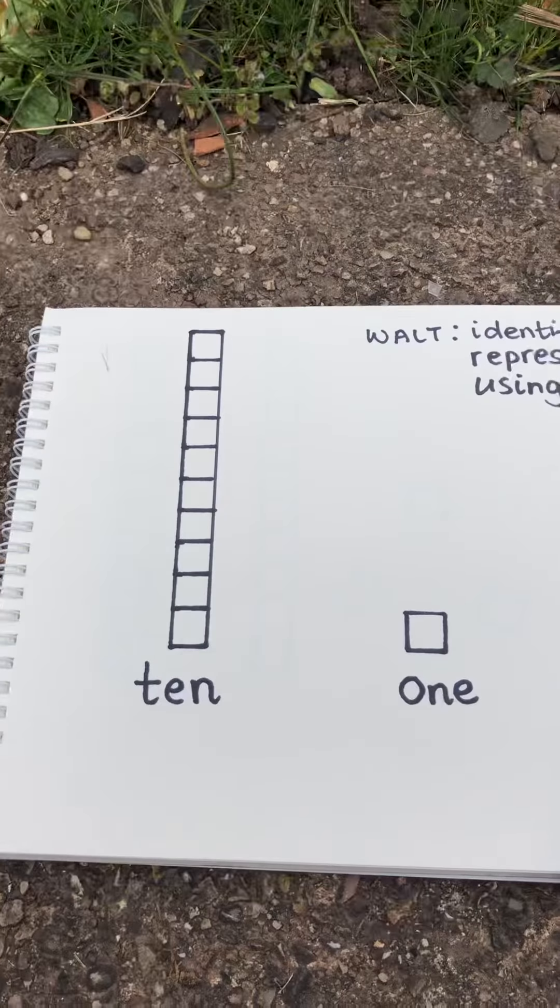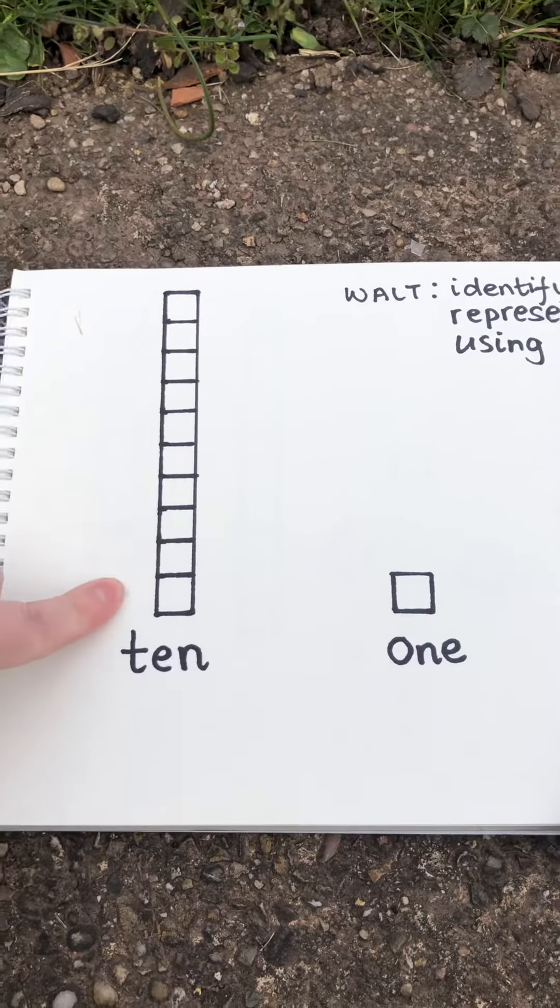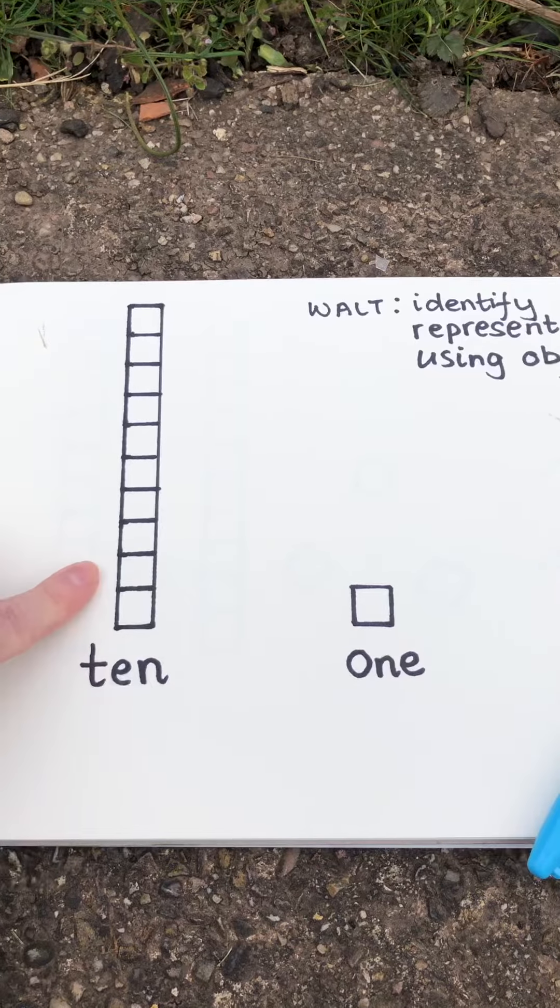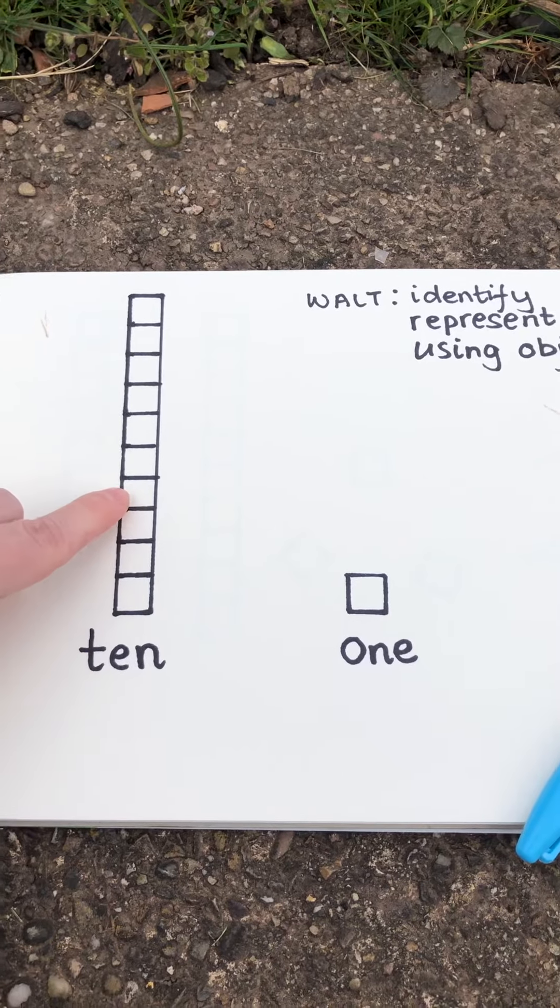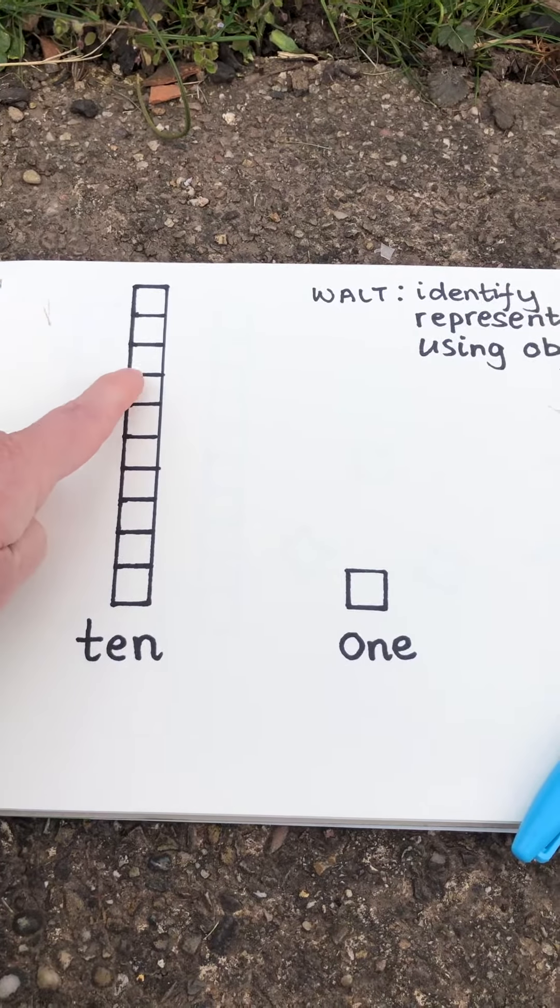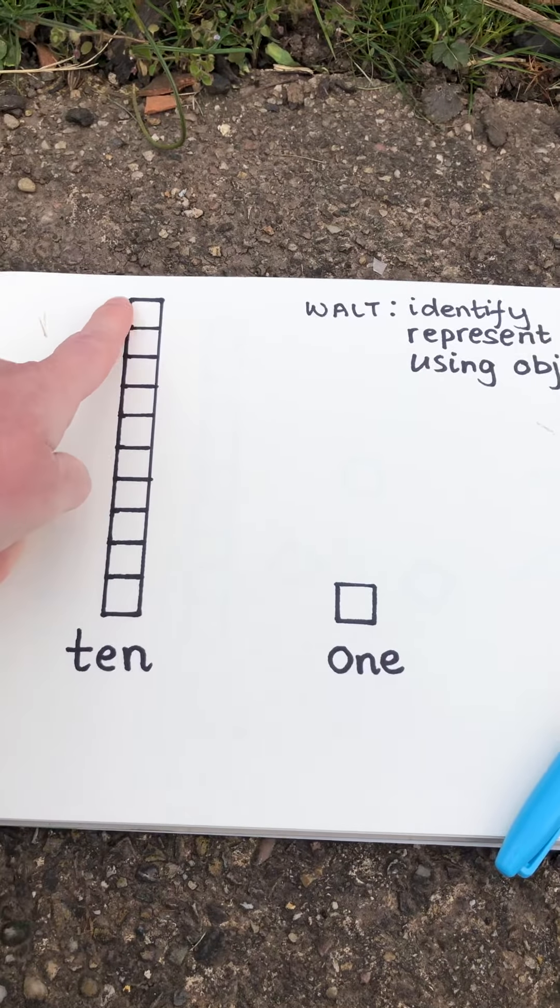So if we look on my piece of paper, I have got a tens rod. We know this is a tens rod because it is made up of 1, 2, 3, 4, 5, 6, 7, 8, 9, 10 squares.